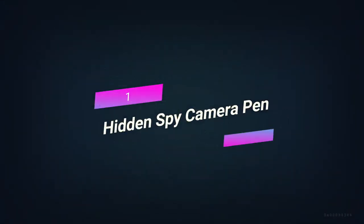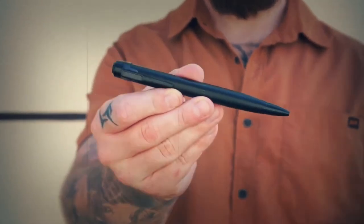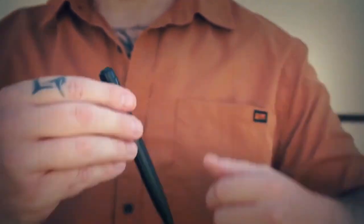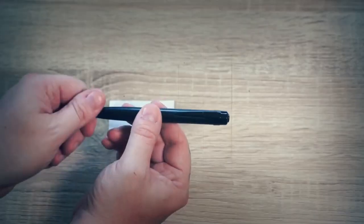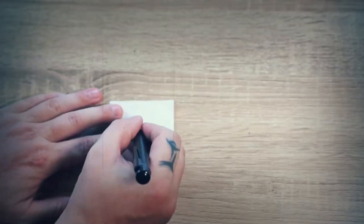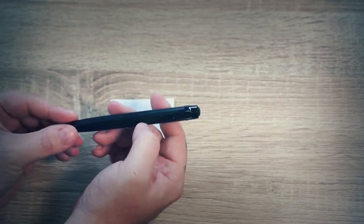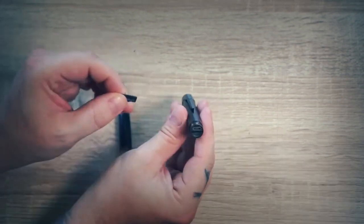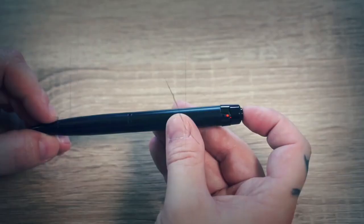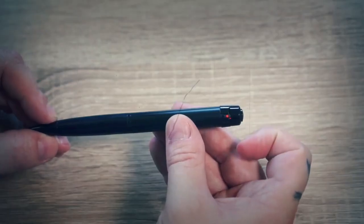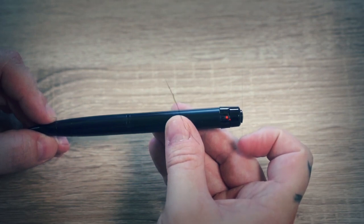Number 1, Hidden Spy Camera Pen. If you know anything about the field of espionage, you know that covert cameras are the most important tool you can use to gather evidence against someone. You have to be sneaky about how you use the cameras so no one figures out what you're up to. The GS-made covert spy camera pen is an example of this kind of device. It can take still pictures, record movies, record loops, and recognize motion.